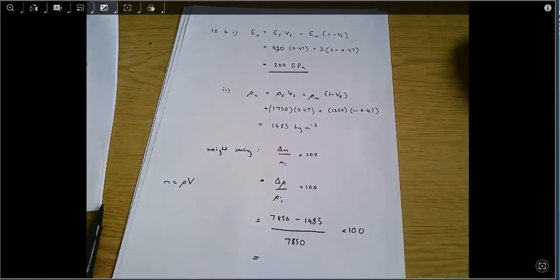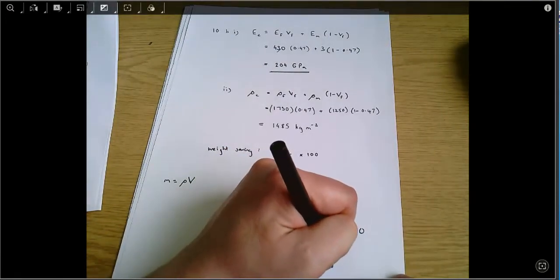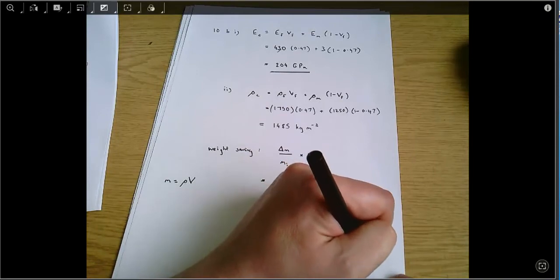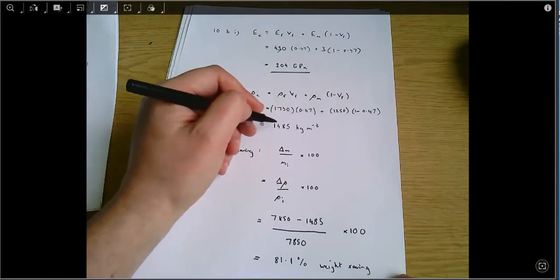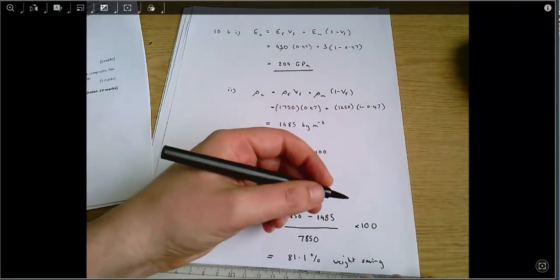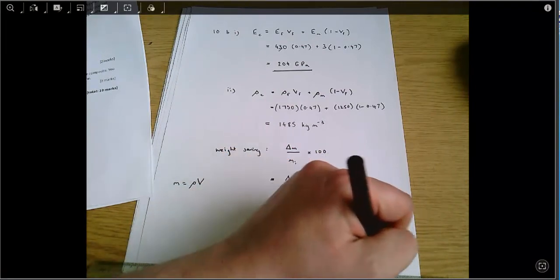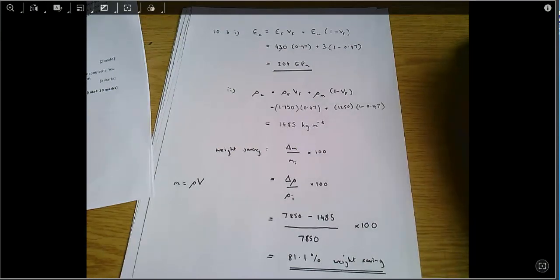And then I can just put that into a calculator. 7850 minus 1485, divided by 7850 times 100, which gives me 81.1% weight saving. This number here is about 80% lower, so it's only about 20% of the density of steel. And that's really what we're calculating here. The final answer is 81% weight saving. And that combined with appropriate written answers for Part A is the complete answer to the question. And that's how you do question 10.